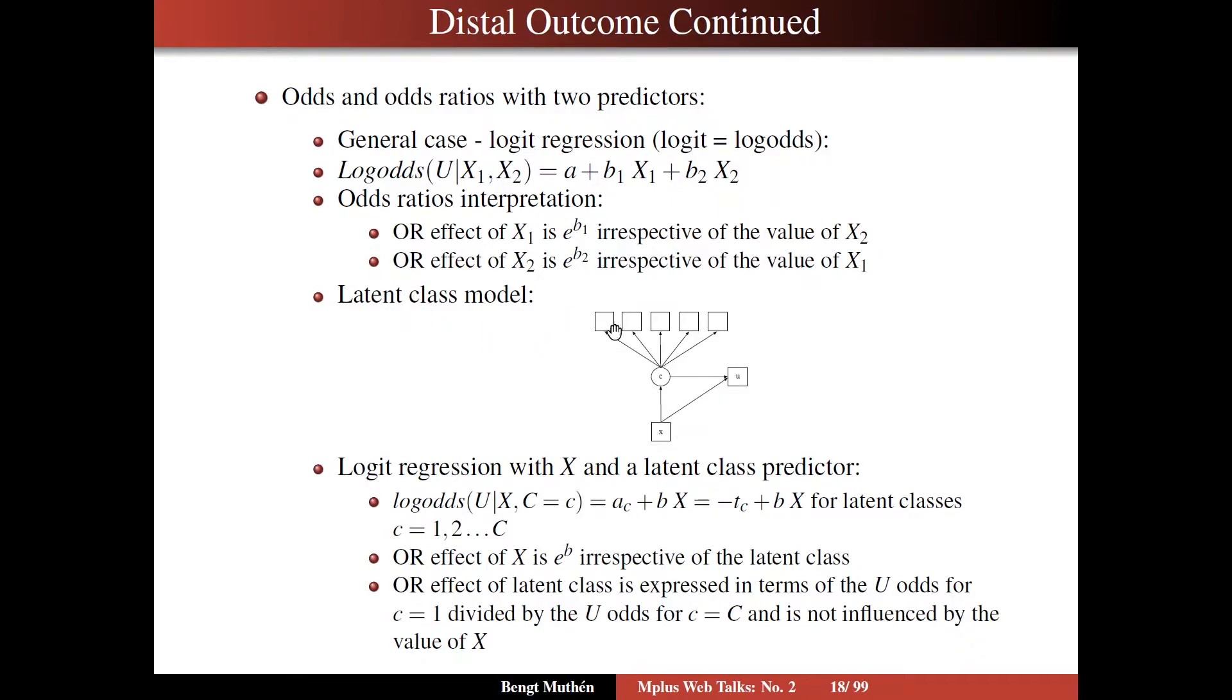Latent class model, if you look at that now, instead of having two observed X's, we have one observed X and one latent X, namely C. Then you have logit regression with X and the latent class predictor C. It's log odds for U conditional on X and C being in a certain class. We put a subscript for the intercept and not a subscript for B in this case, because we're saying that the intercept of U can vary as a function of C, but the slope of U on X does not vary as a function of C.